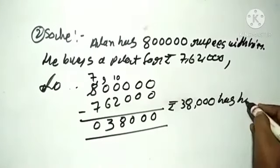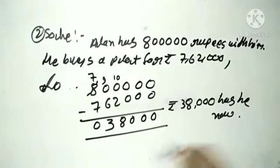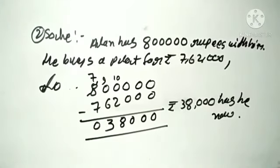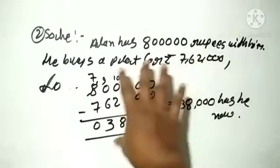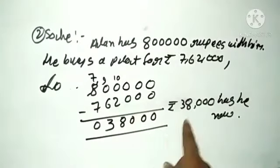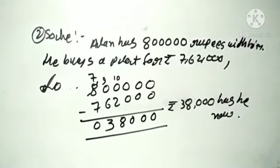He has now rupees 38,000. Students, 8,00,000 rupees total they have, 7,62,000 they spent on the plot, so they have 38,000 remaining. Take a screenshot. This is what you will note.